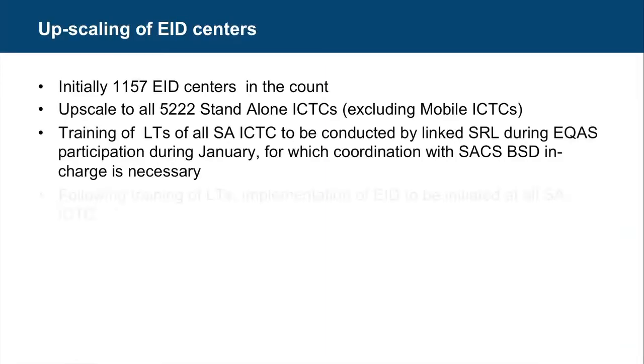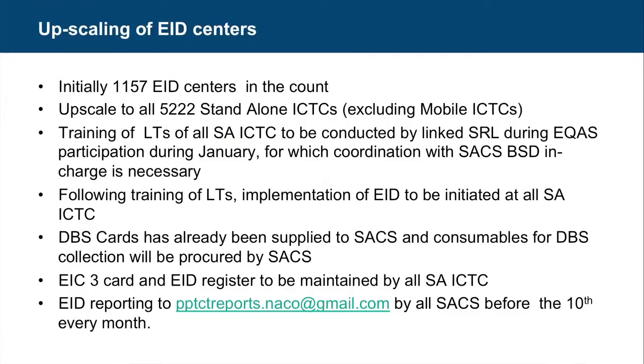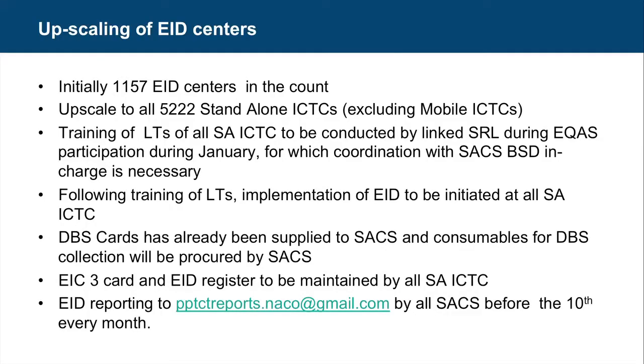We currently have 1,157 centers, but there is a need to upscale the program to all the standalone ICTCs in the country, except for the mobile ICTCs. After training, we need cards and consumables. DBS cards have been supplied by NACO and will be supplied again within three months. DBS consumables is a challenge because we had decentralized procurement to the SACs and some were not able to procure them. This time, we have put in a file in NACO, approved by AS, to procure the kits from NACO itself. It is expected that by April 1st, 2016, all standalone ICTCs will be implementing this program.